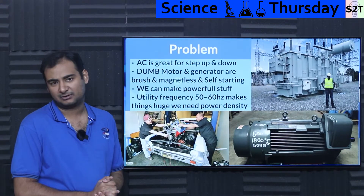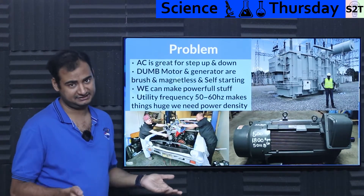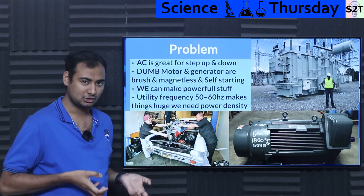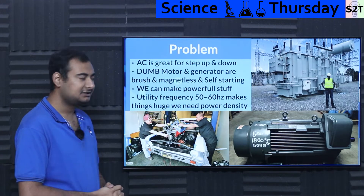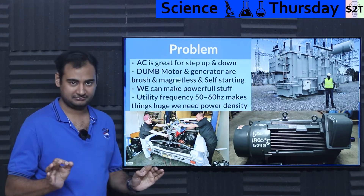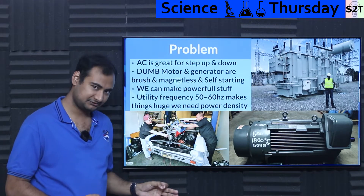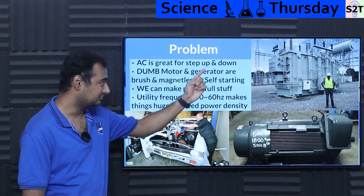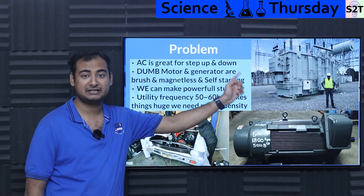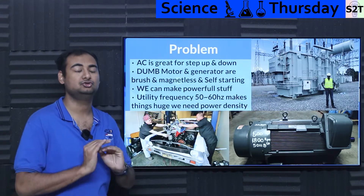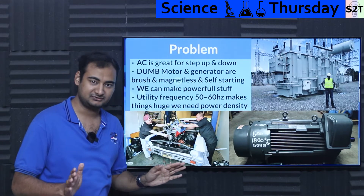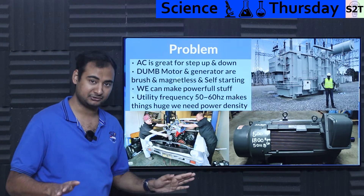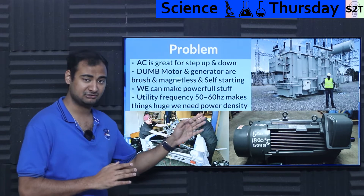Now what exactly is the problem with the current AC system that we have to go to high frequency? Well, the reality is AC is great — that's why we use it for power transmission, because stepping it up and stepping it down is super easy. It's a dumb device, meaning you don't have to think about it, and it's very efficient also.